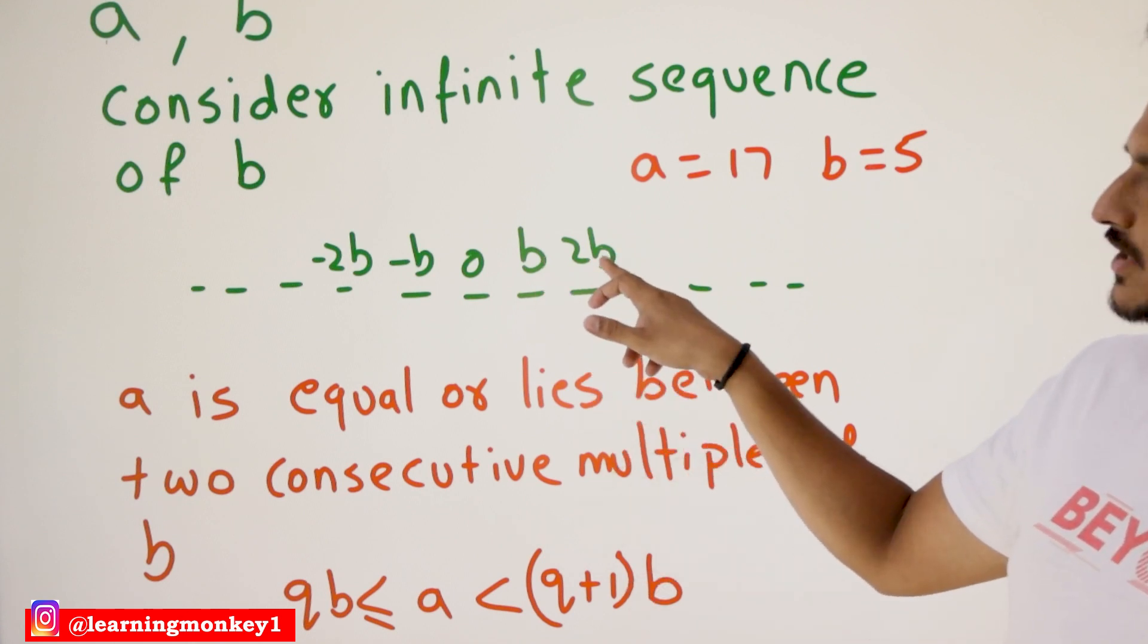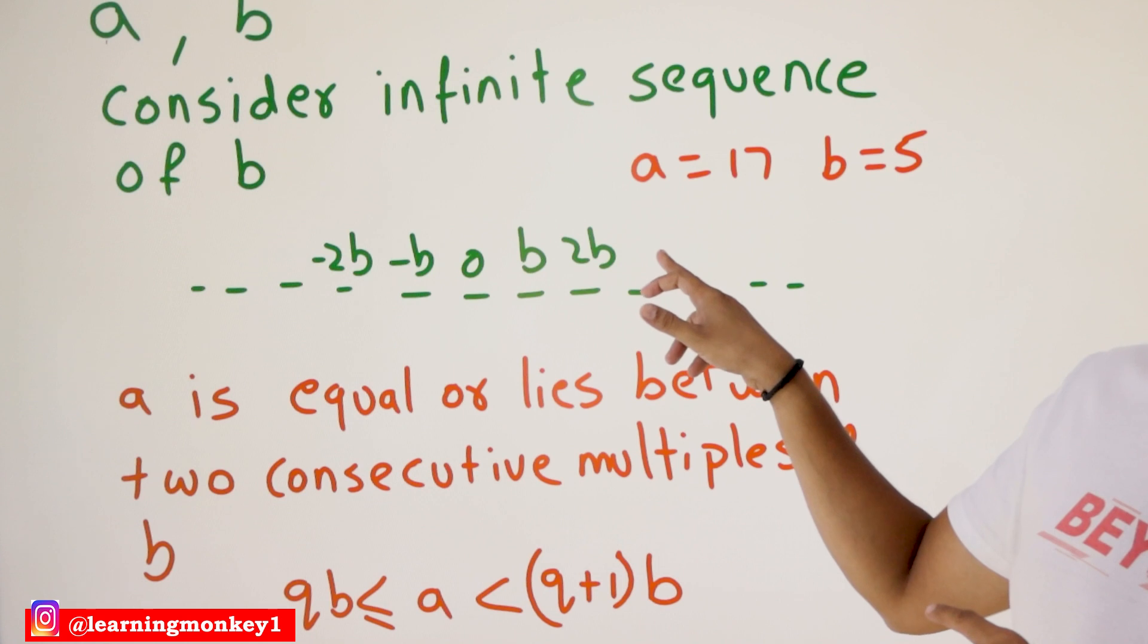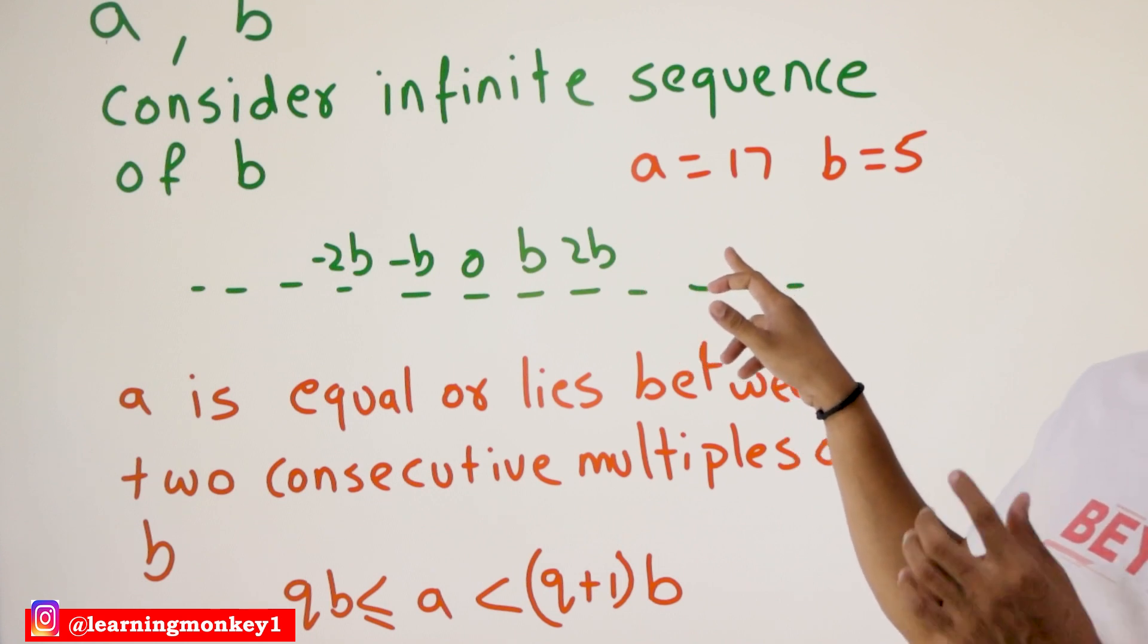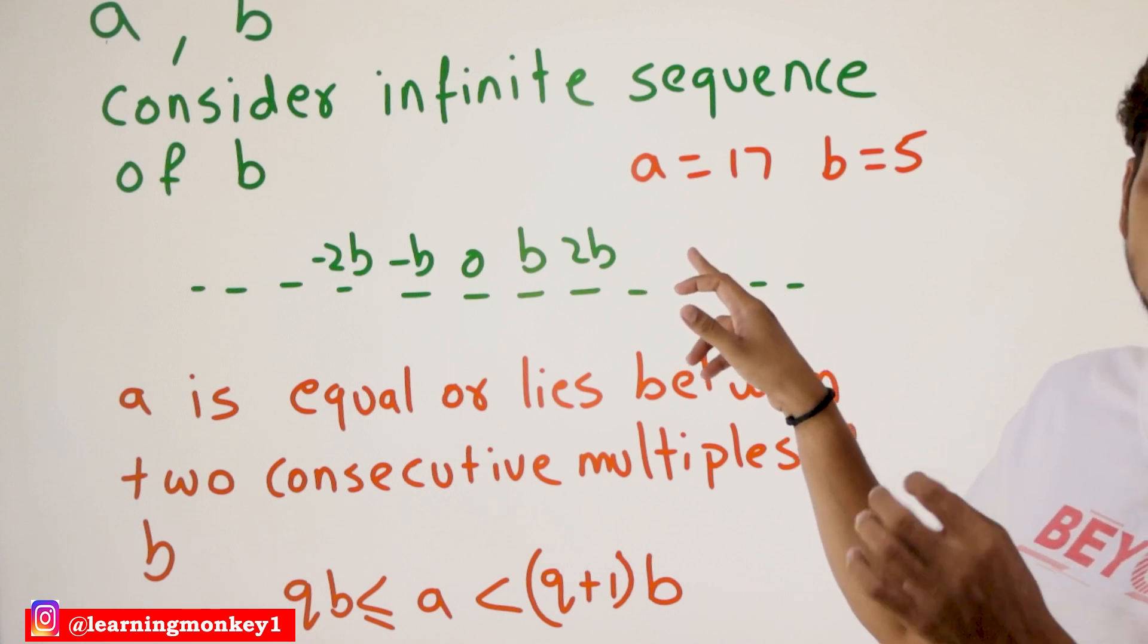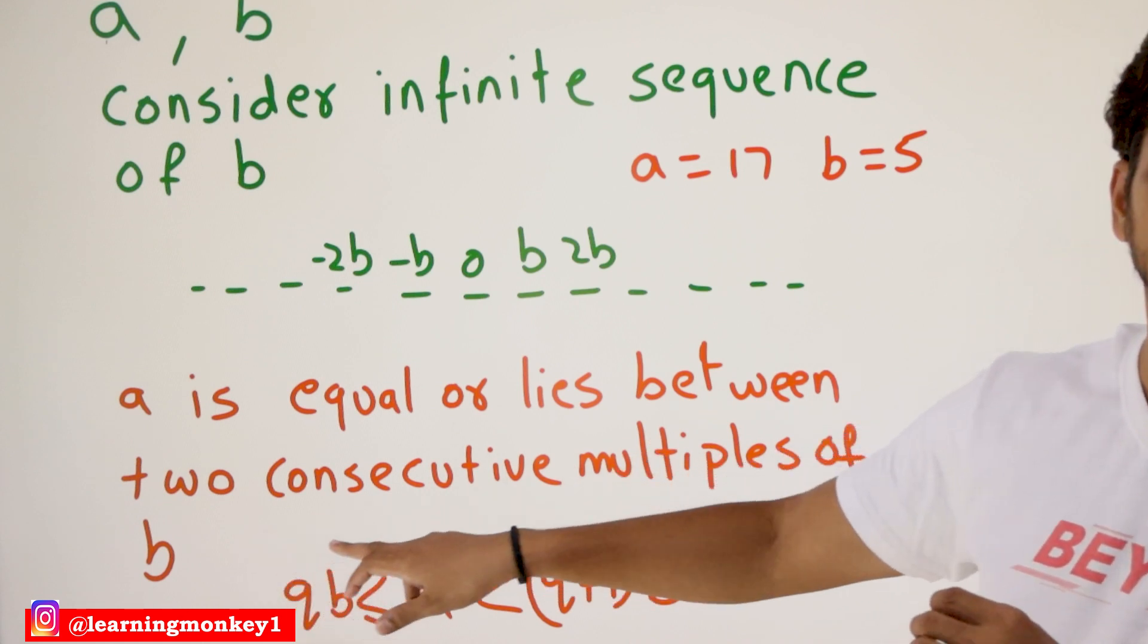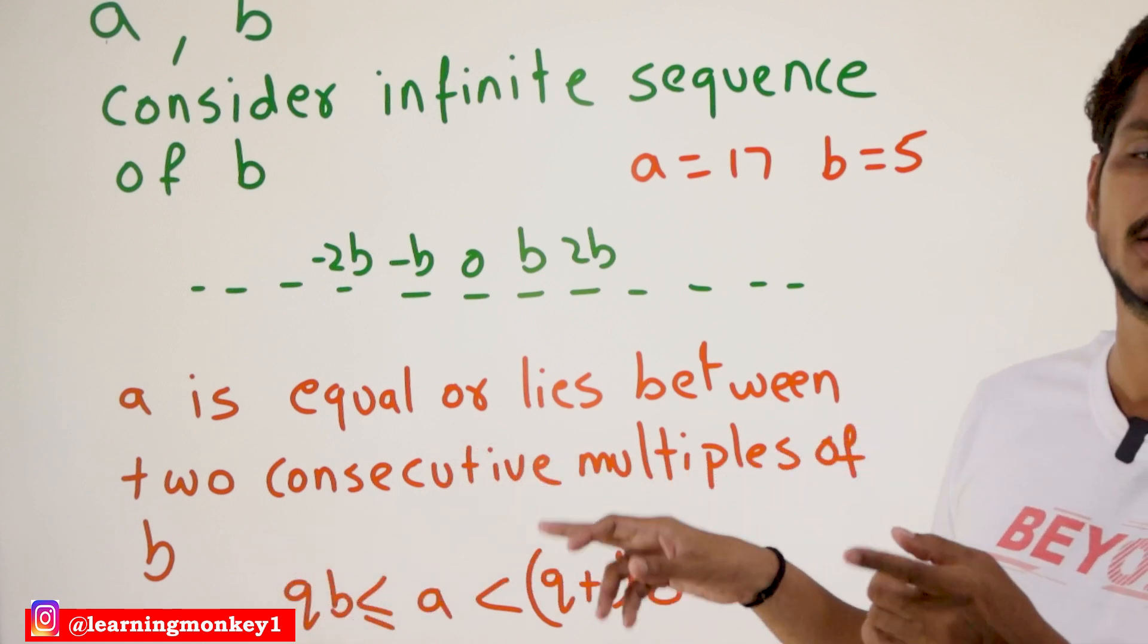5, 2 fives means 10, 3 fives means 15, 4 fives means 20. 17 lies between two consecutive, two multiples of B. It lies between 3B and 4B. 3B means 15, 4B means 20.